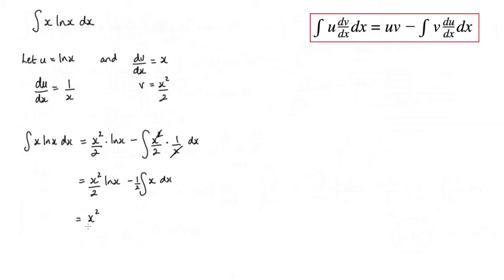So I've got x squared over 2 log x minus a half, and then the integral of x will add x squared over 2 and plus my constant of integration.